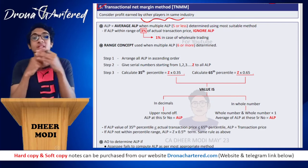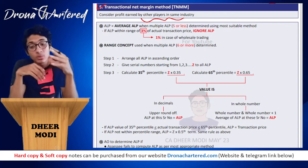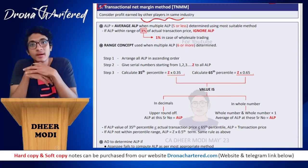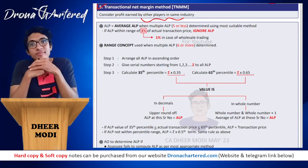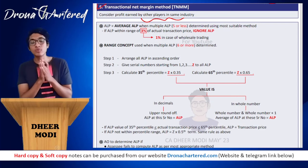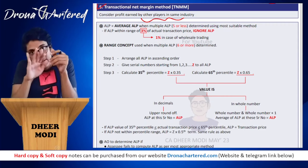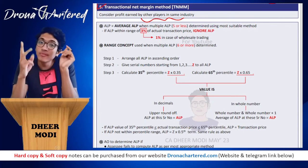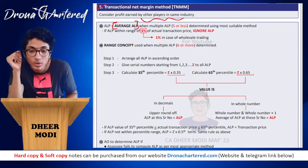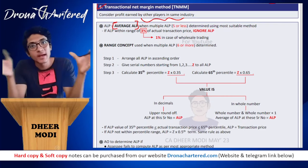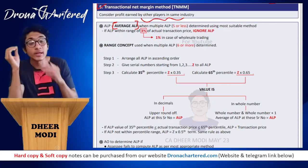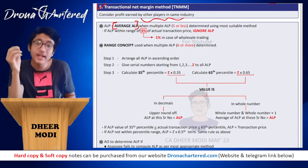Now regarding ALP determination: when using any of these five methods, you may get multiple ALP values from comparable transactions. If the number of ALPs is five or less, use the simple average method — add all ALPs and divide by the number. That average will be your ALP. Then there is a 3% buffer: if the calculated average ALP falls within 3% of your actual transaction price, the ALP is ignored and your actual transaction price is accepted as the arm's length price.